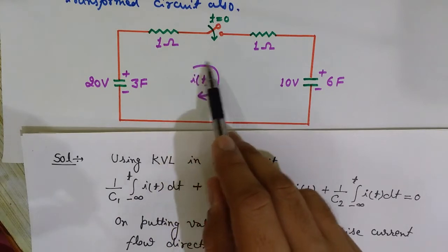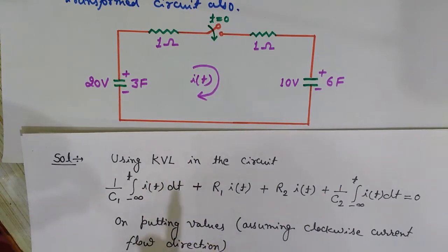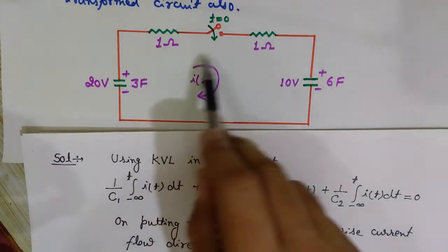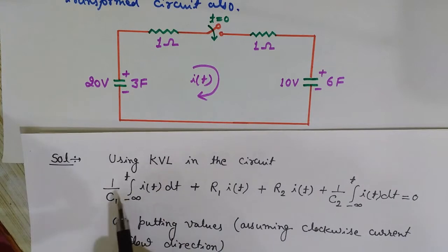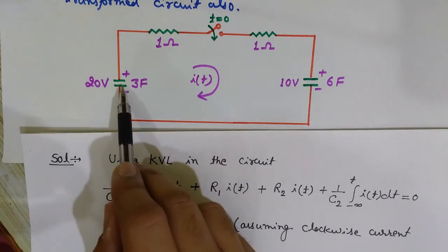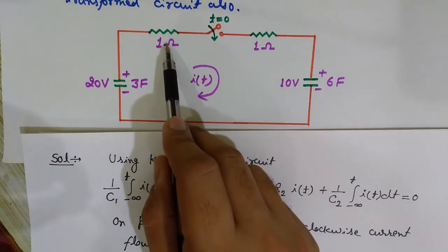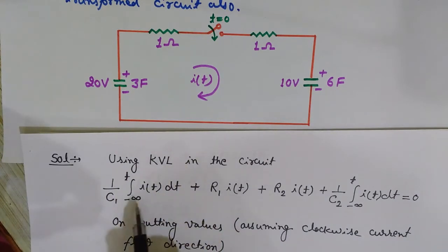I have assumed that current is flowing in the clockwise direction. According to Kirchhoff's voltage law, the net potential drop in a closed circuit is zero. I have labelled the components: C1 and C2 for the capacitors, R1 and R2 for the resistors. The voltage across a capacitor is (1/C) × integral of I(t) dt.